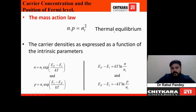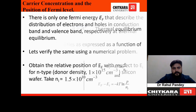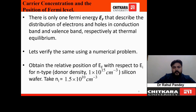Under thermal equilibrium, a semiconductor follows the mass action law: the product of electron concentration and hole concentration equals the square of the intrinsic carrier concentration (np = n_i²). The carrier densities can also be expressed as a function of intrinsic carrier concentration and the intrinsic Fermi level. The derivation of these formulas will not be discussed here, but a separate video can be made if required.